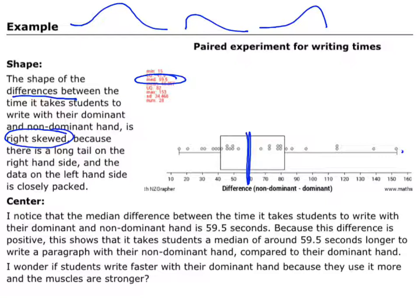So I can say I notice the median difference between the time it takes students to write with their dominant and non-dominant hand is 59.5 seconds. And so what does that mean? Which one are they taking longer? Well, we're getting a positive value. So positive value means that the non-dominant hand is bigger, or in this case longer, than their dominant.